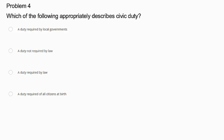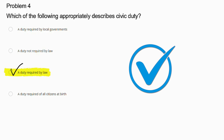Problem number 4. Which of the following appropriately describes a civic duty? A duty required by local governments, a duty not required by law, a duty required by law, or a duty required of all citizens at birth? The correct answer is a duty required by law. Civic duty involves responsibilities like obeying laws, paying taxes, and serving on juries, which are all legal requirements. The other options are not correct because civic duty is not just about local governments, and it isn't something you're born with — it's required by law for all citizens.